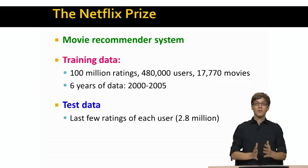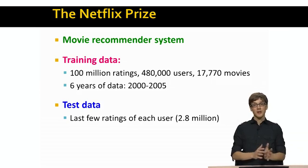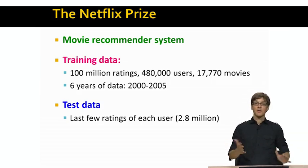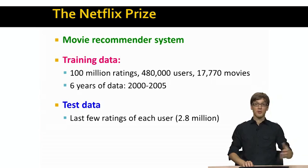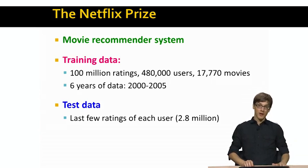We want to predict and make sure that the predicted ratings correspond to the actual true ratings of the people who liked those movies. So basically we are given 100 million movie ratings and we want to build a recommender system out of this.